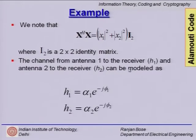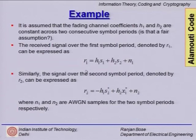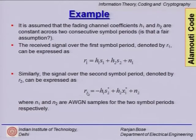The channel gains H1 and H2 are complex and can be modeled as α1·e^(jφ1) and α2·e^(jφ2). Multiplying it out, the first received signal in time slot 1 is R1 = S1·H1 + S2·H2 + N1. Similarly, in the second time slot we have R2 = -H1·S2* + H2·S1* + N2.